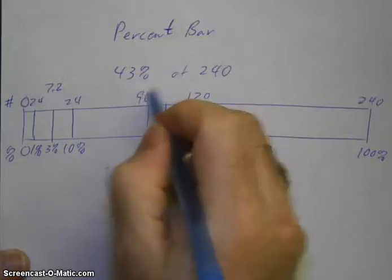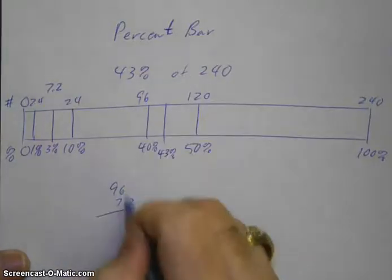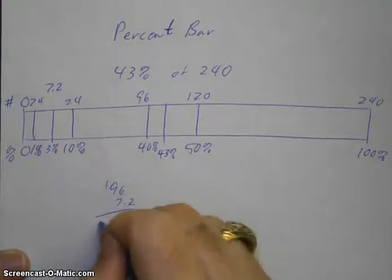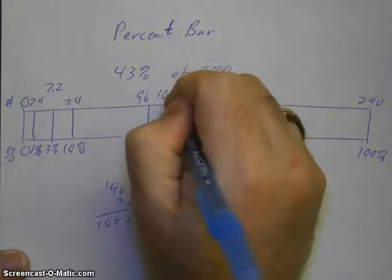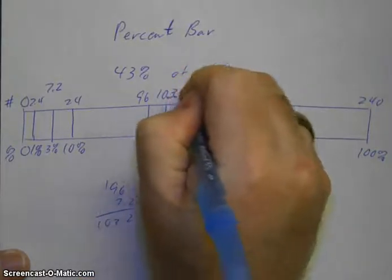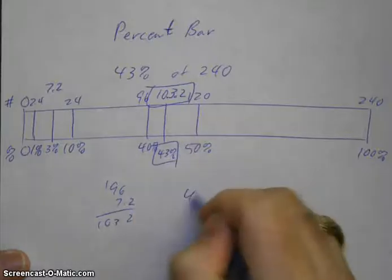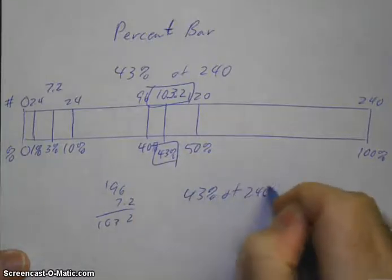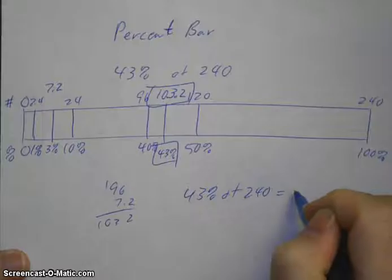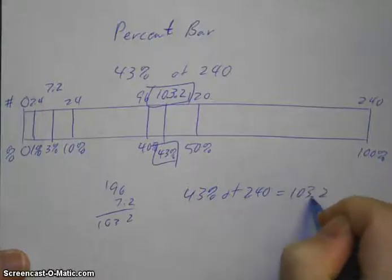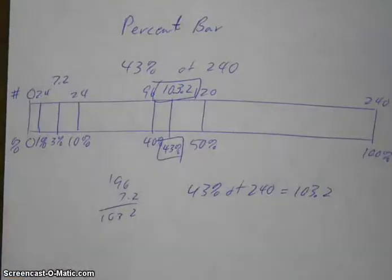7.2 and 96 is 103.2. So 43% of 240 equals 103.2. Same answer we've gotten on the other problems.